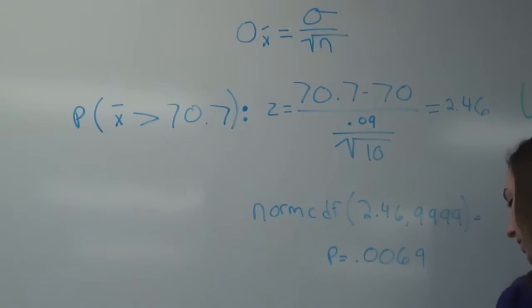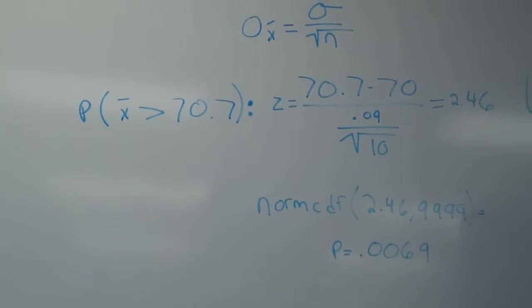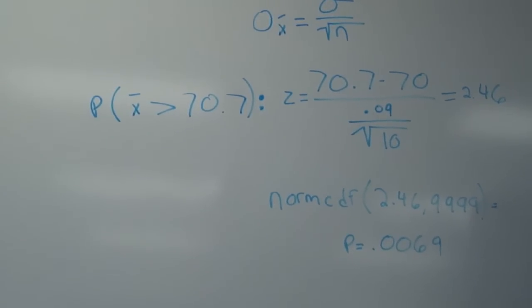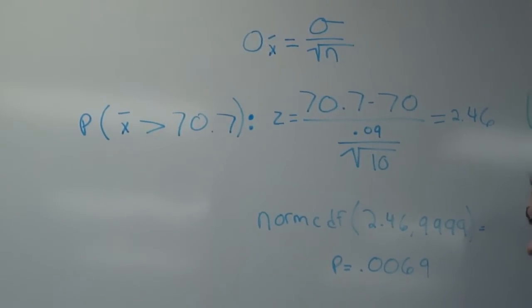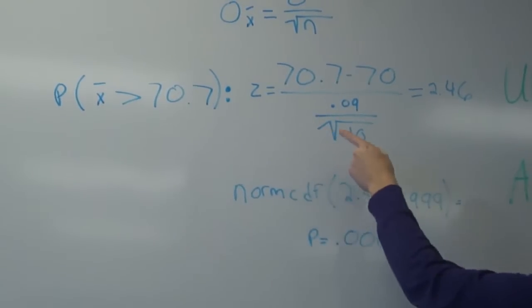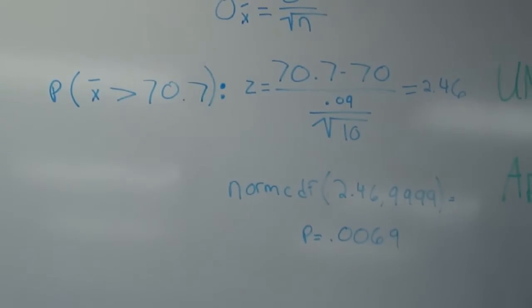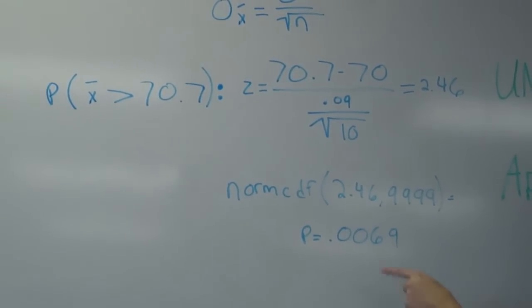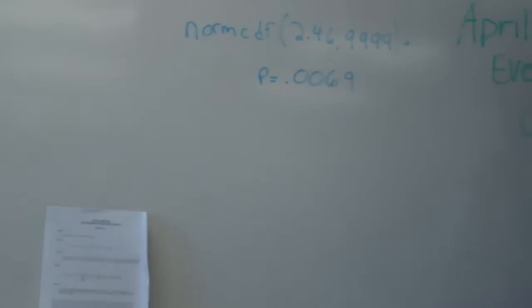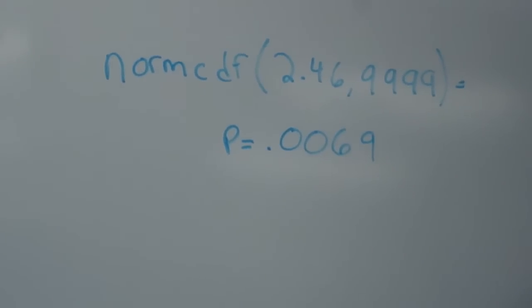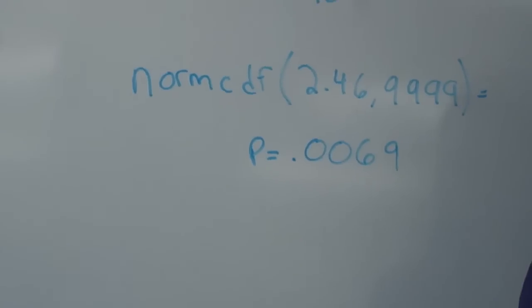Since the filling equipment is working properly, I want to know the probability that a random sample of 10 cars will have a mean ore weight of 70.7 tons or more. So, what I did was I found the z-score that the mean weight would be 70.7 tons or more, and I got 2.46. So then, on the calculator, you do normal CDF of 2.46 and then 9999, and we got a p-value of .0069.